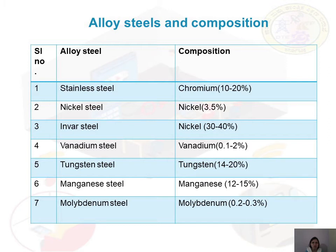Steel alloys generally contain 10 to 20 percent of chromium as their main alloying element, with some other alloying elements also combined. We will now learn in detail about each steel alloy.